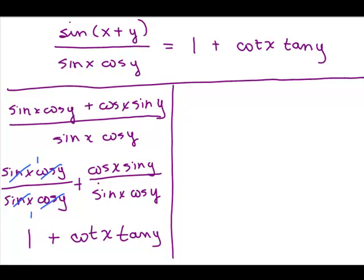You could have also taken an extra step right here and written this as cosine X over sine X times sine Y over cosine Y. So if you wanted to show every single step, you could do that. Most people can go directly from here; it's so close.